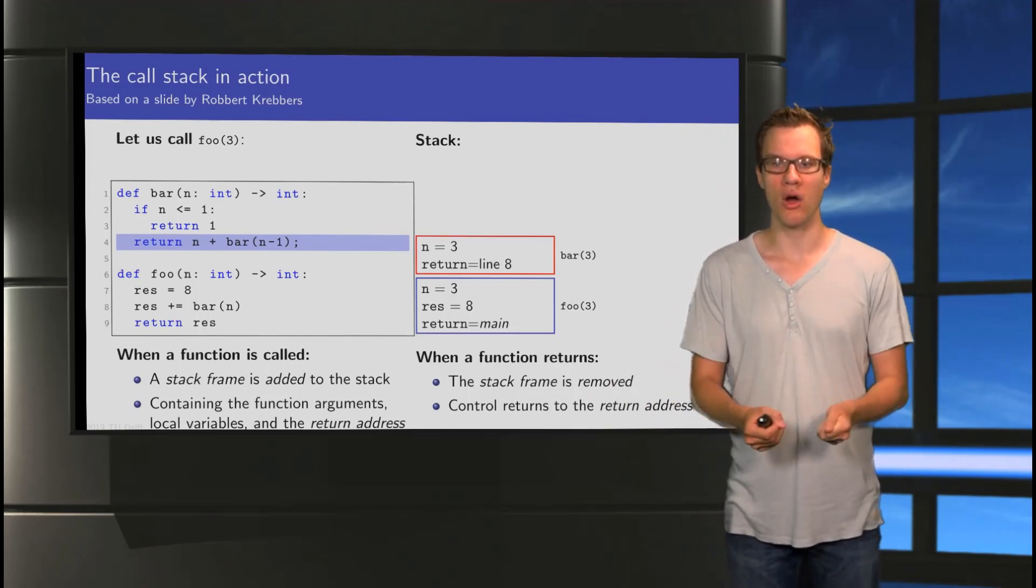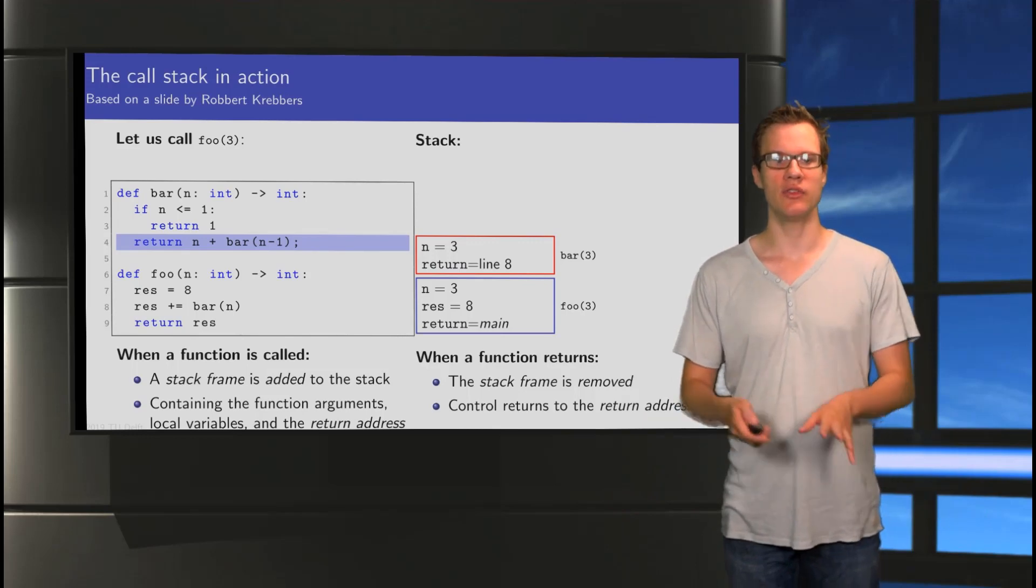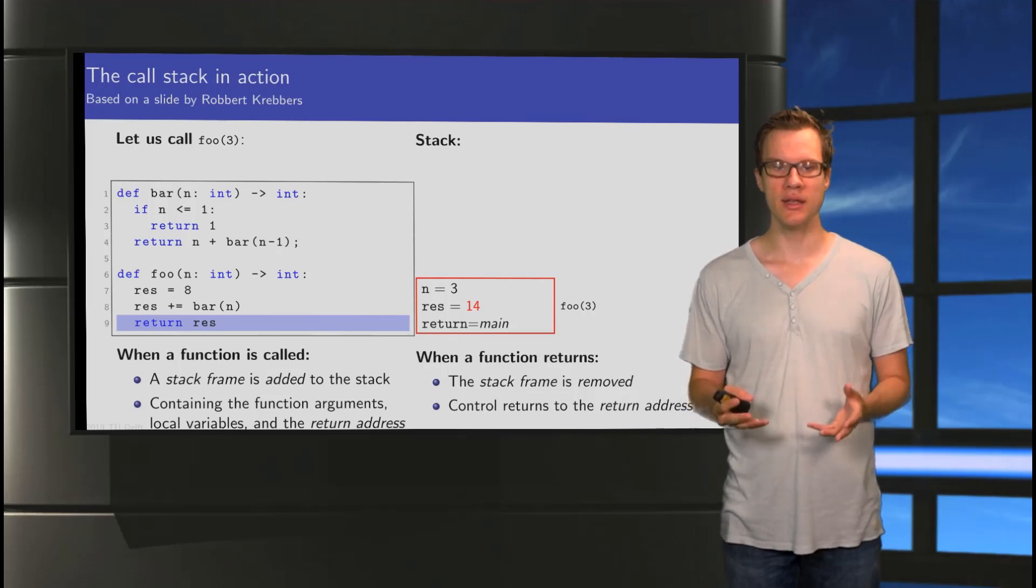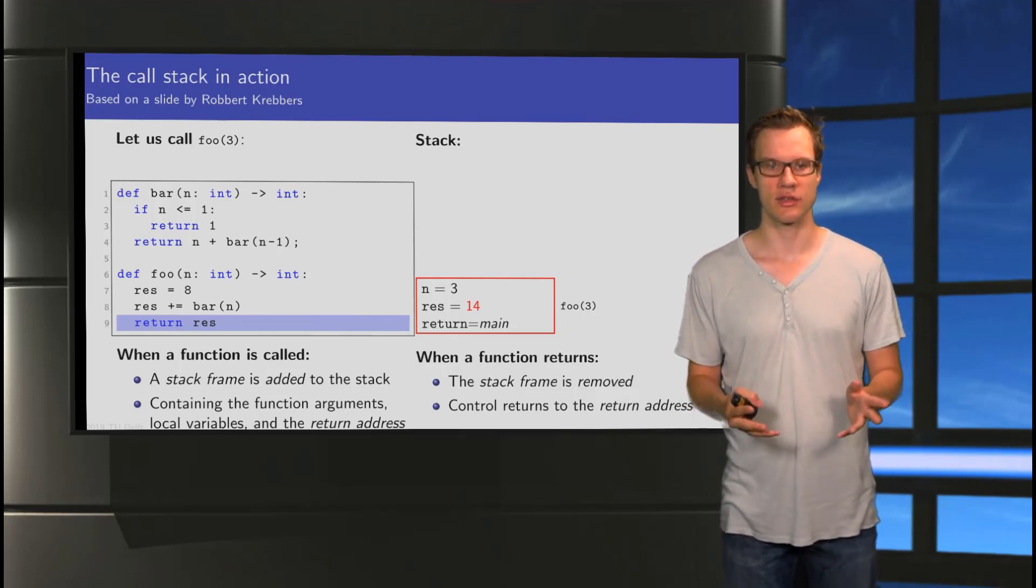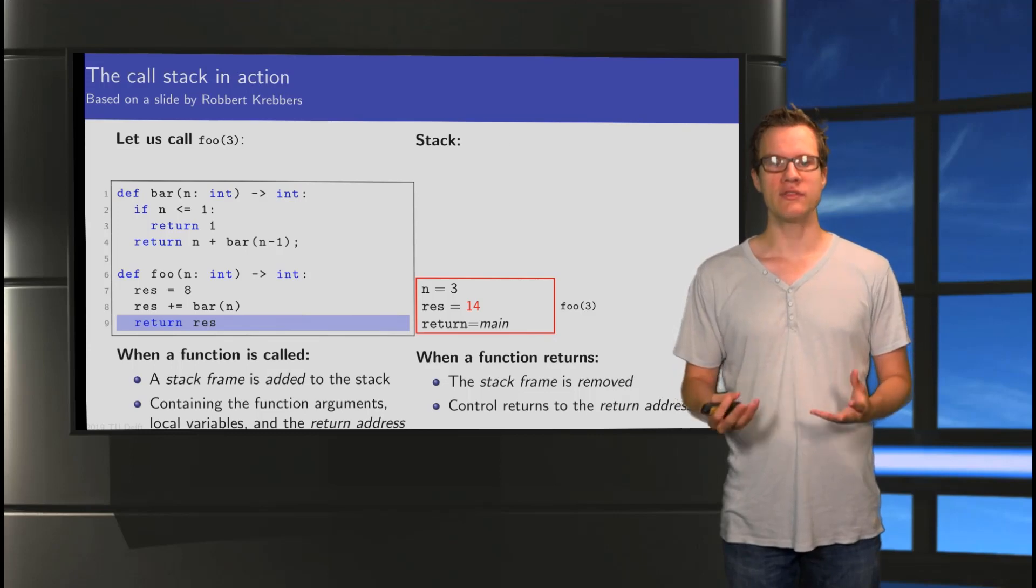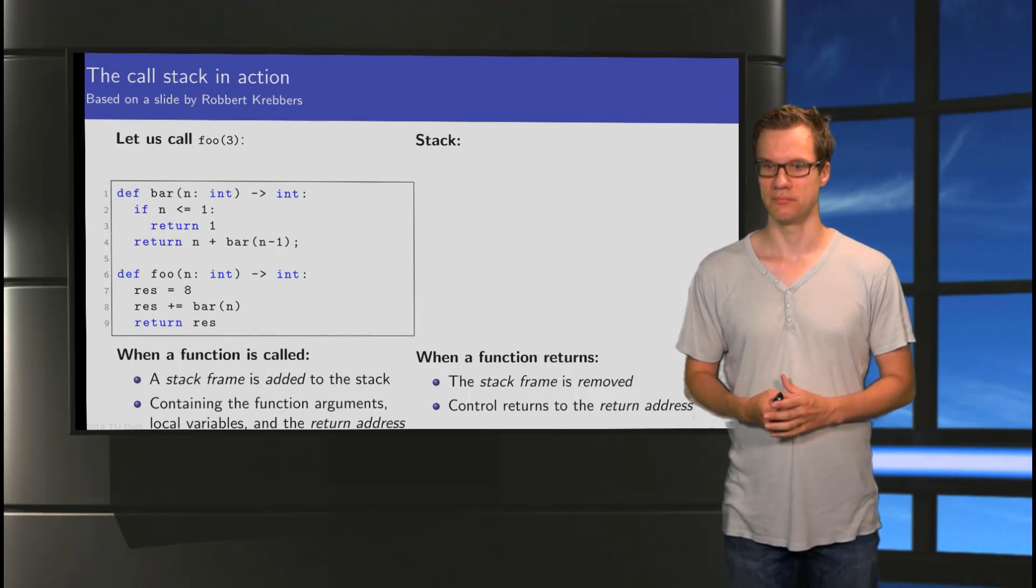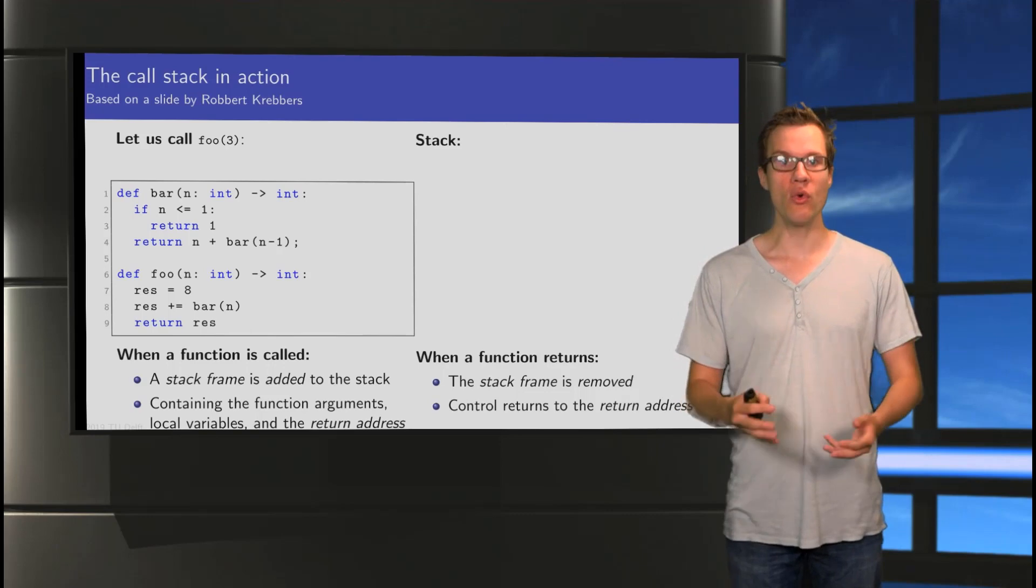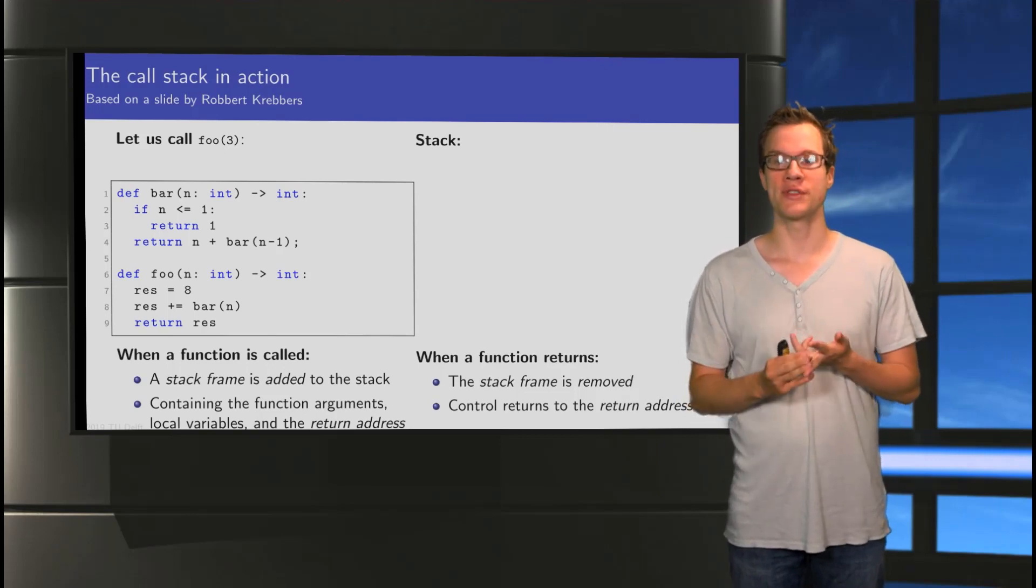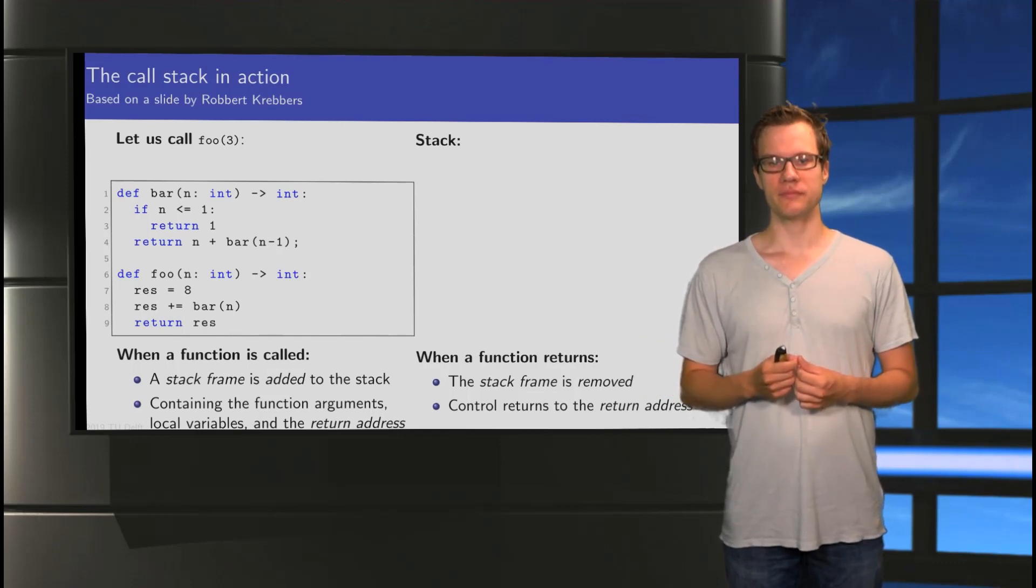So, now we're all the way back into bar with the parameter 3. Okay, this now has all the information. It adds them together. And it can return. And now we get to line 9. Line 8 is done. It has updated res. It has added 6. Because if you kept track, 3 plus 2 plus 1 equals 6. So, res has become 14. And now this thing is also done, ready to return. It can return to main. And the stack is empty. Well, this part of the stack that we've been looking at is empty. Of course, main will still have a part on this stack. Containing some local variables, maybe even some arguments. And of course, a return address for when it's done. Whatever that may be for a main function.